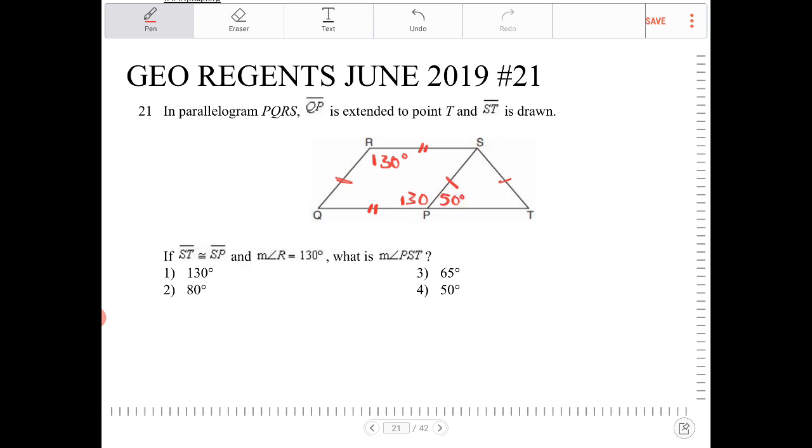And since the triangle PST is an isosceles triangle, angle STP will also be 50 degrees.